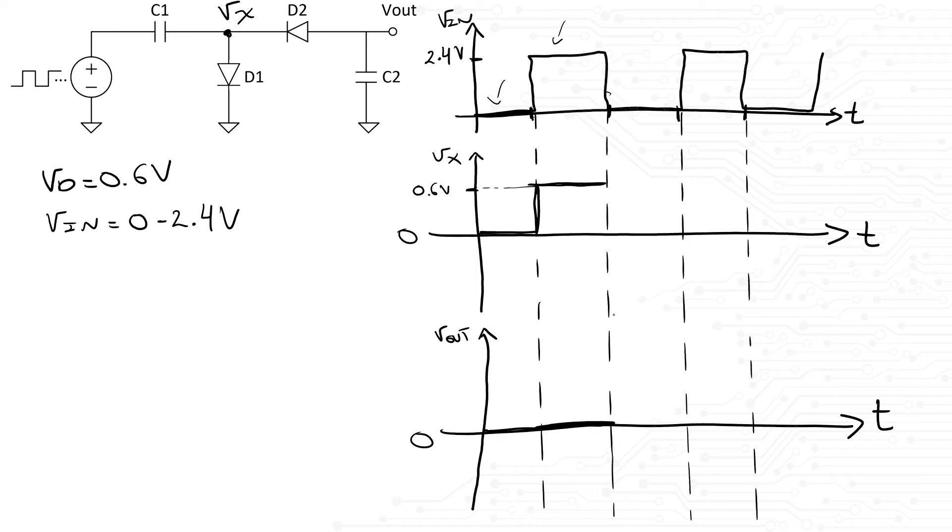It's the next part that gets confusing for some. When the input voltage goes back to 0, what happens? Well, the delta V across C1 should be maintained. We know the delta V across C1 is 2.4 volts minus 0.6 volts from the diode. That is 1.8 volts. That means when the input voltage goes back to 0, Vx should immediately become negative 1.8 volts to maintain the original delta V, right?